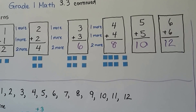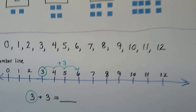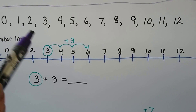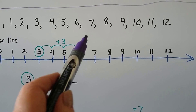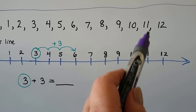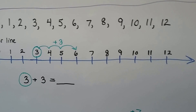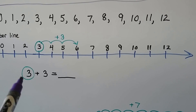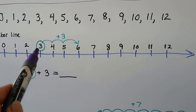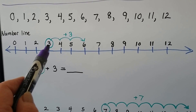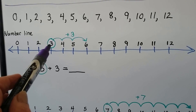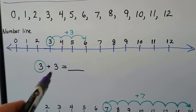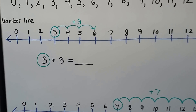Here are our counting numbers to 12: 0, 1, 2, 3, 4, 5, 6, 7, 8, 9, 10, 11, 12. We can write them on a number line — all the numbers are on a line. And we can add 3 plus 3. We start at the 3, the first addend, and we make 3 hops: 1, 2, 3. That lands us on 6. So 3 plus 3 is equal to 6.